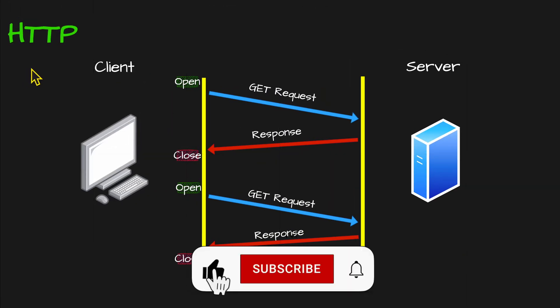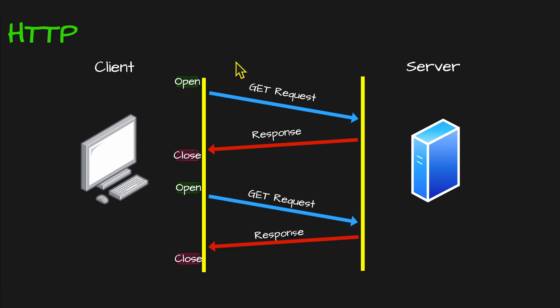We'll start by looking at how a typical HTTP request works. On the left-hand side, we have our client. On the right-hand side, we have our server. What typically happens when you want to ask for a resource, like an HTML file, a JavaScript file, or make an API call, is you'll open a connection on the server by making a GET request, and the server will respond back, then you'll close that connection. And when you want to ask for your next resource, like an API call, you'll open a connection, make that request on the server, and get a response back, and then that connection will close.